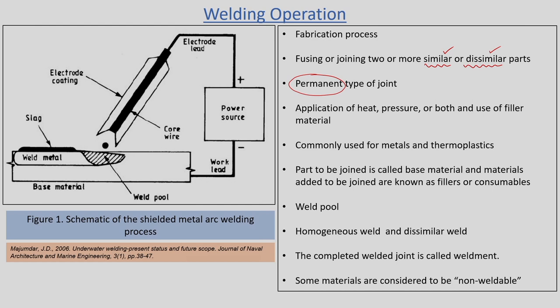To weld or join these two materials together, we have to use heat — thermal energy — and we use pressure, or we use both simultaneously to join the two materials together, and then we get a strong bonding joint of two materials.